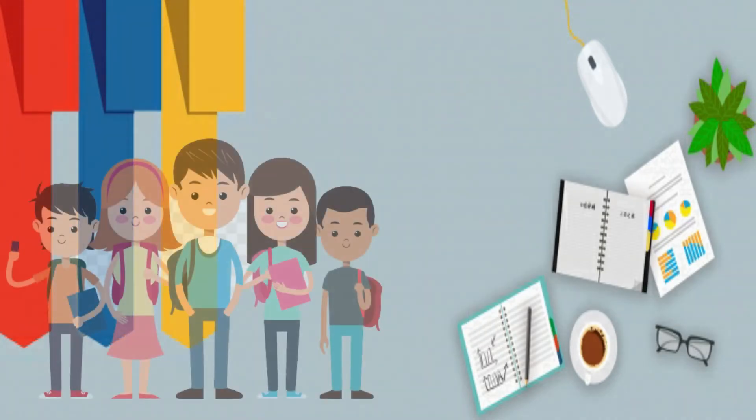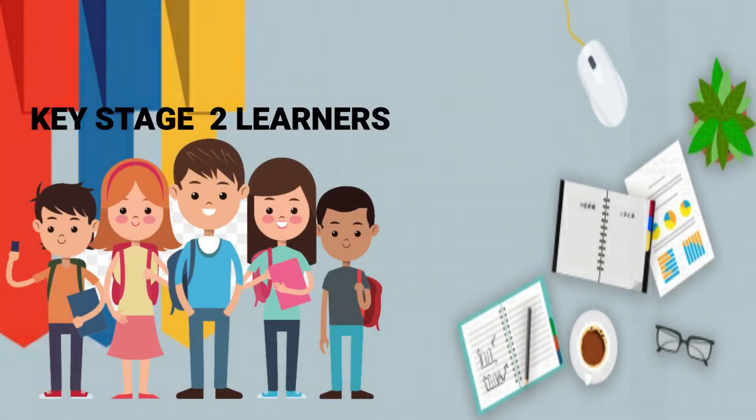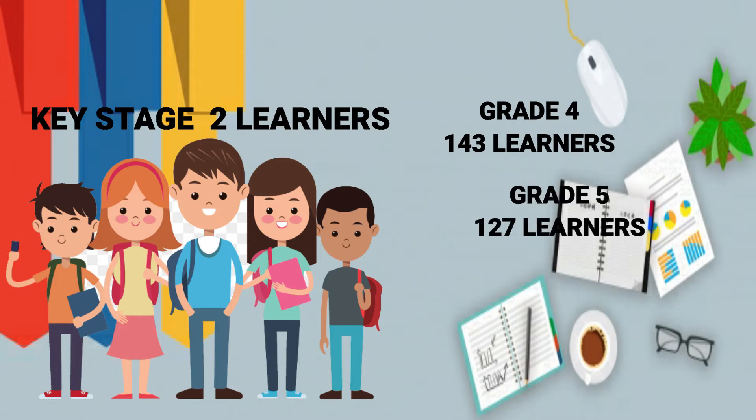The participants of this study were the pupils from Key Stage 2 of Ibea Elementary School during the school year 2021-2022. The school Key Stage 2 had a total of 12 sections: 4 sections in grade 4 with 143 total learners, 4 sections in grade 5 with 127 total learners, and 4 sections in grade 6 with 131 total learners.